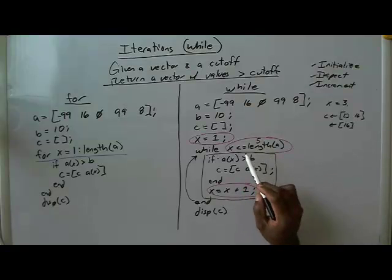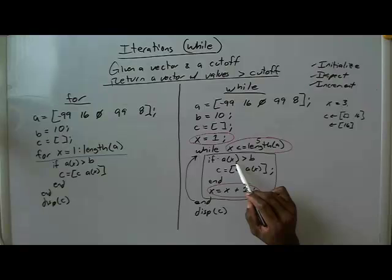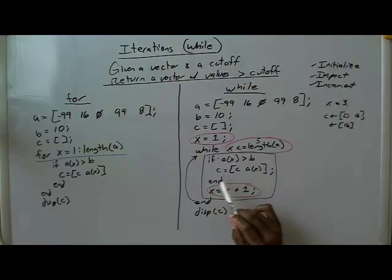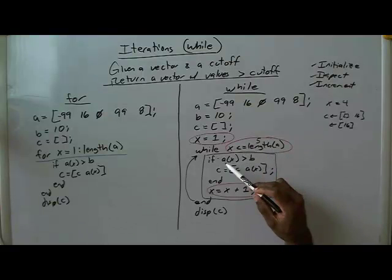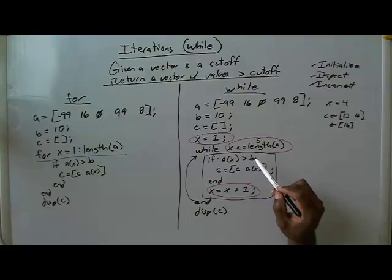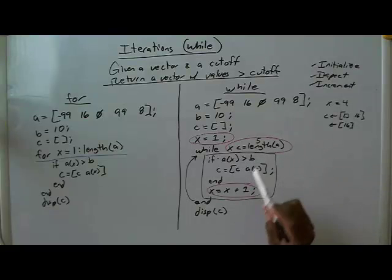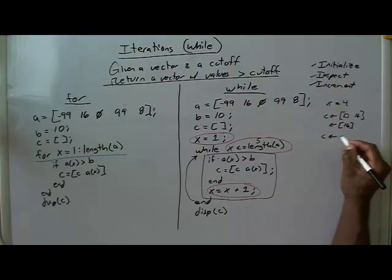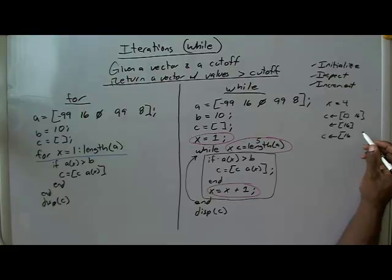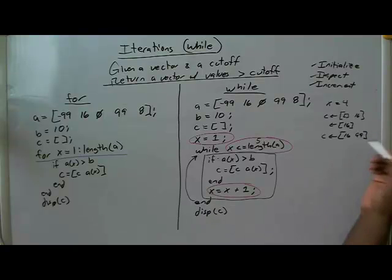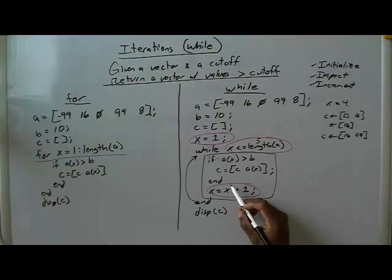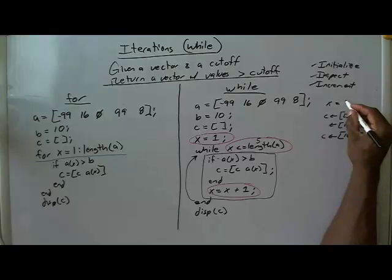We check: is 3 less than 5? Yes. Is A indexed at 3 greater than B? A at index 3 is 0 — that is not greater than 10 — so we skip and increment. Now x is 4. We check: is A indexed at 4 greater than B? A at index 4 is 99 — yes, that's greater than 10. So C now gets the old C, which was the vector 16, concatenated with A indexed at 4, which is 99. C is now the vector 16, 99.